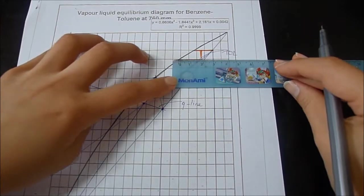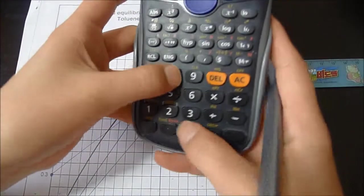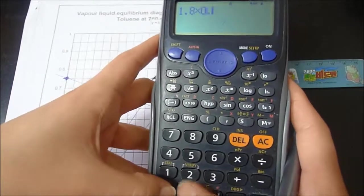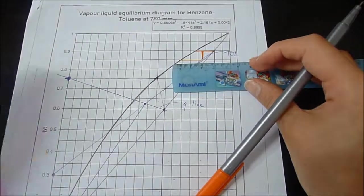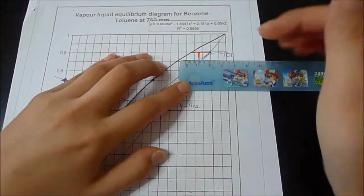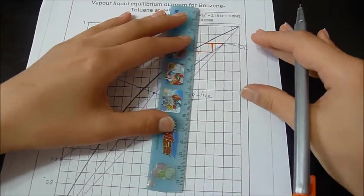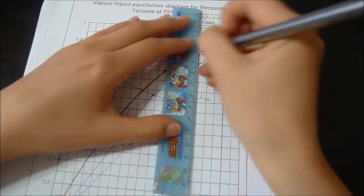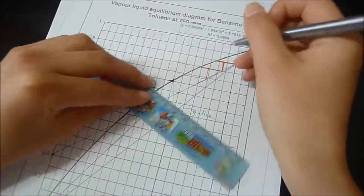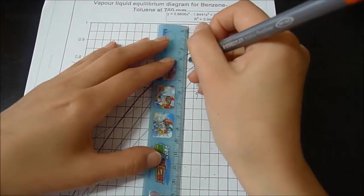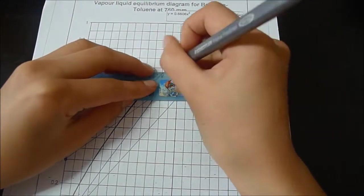This is 1.8. 1.8 times 0.6 equals 1.08, which is around here. So we go down around here. We do this until we reach XW. We can do this approximately.